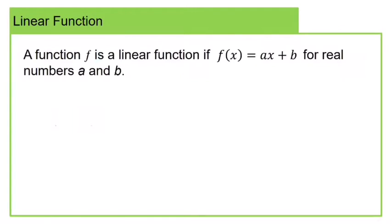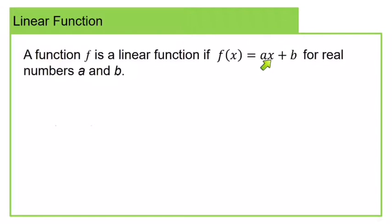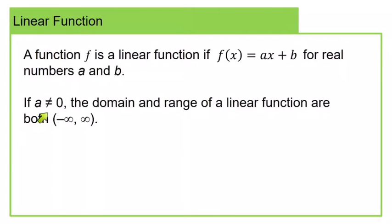A function f is a linear function if f(x) equals ax plus b for real numbers a and b. We need to be able to write our function as the sum of an x term and a constant. It's possible for b to be 0, in which case you just would not see the constant term, and it's also possible for a to be 0, in which case you wouldn't see the x term, but still you would have a linear function. Now if a is not equal to 0, the domain and the range will both be negative infinity to positive infinity.